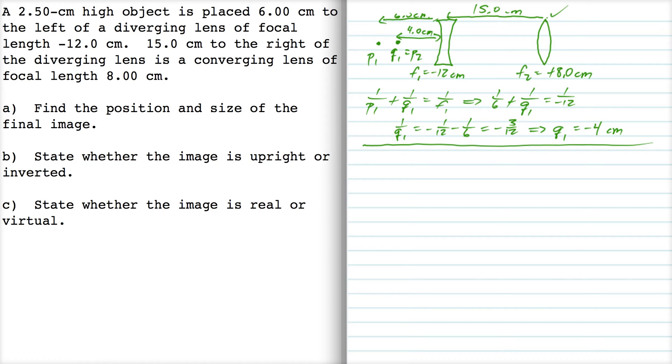Now the distance from this point here, P2, to lens 2 is 4 plus 15. So it's 19 cm. So now we can work out what's going on with lens 2.